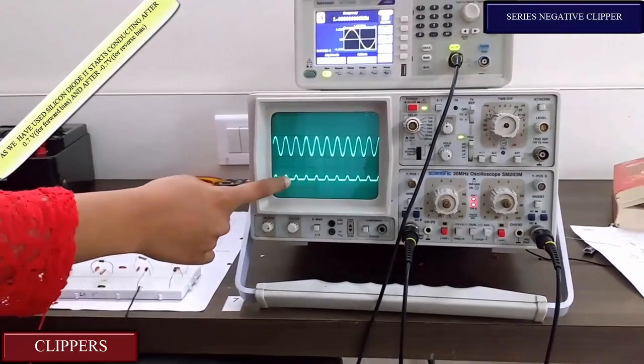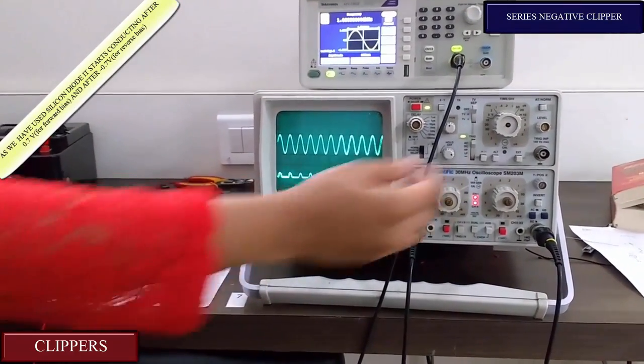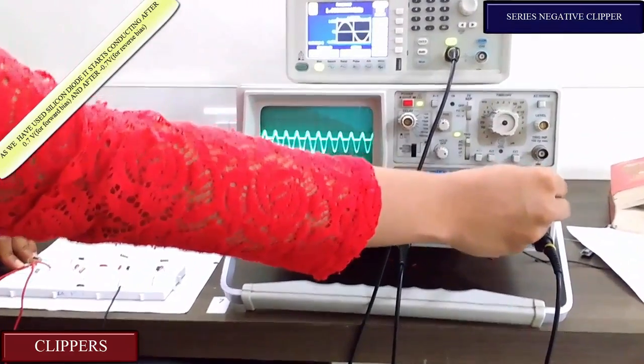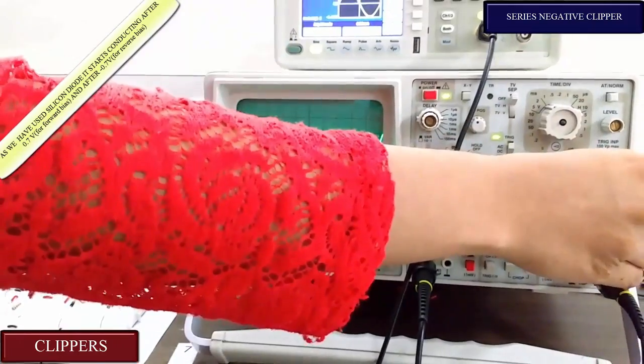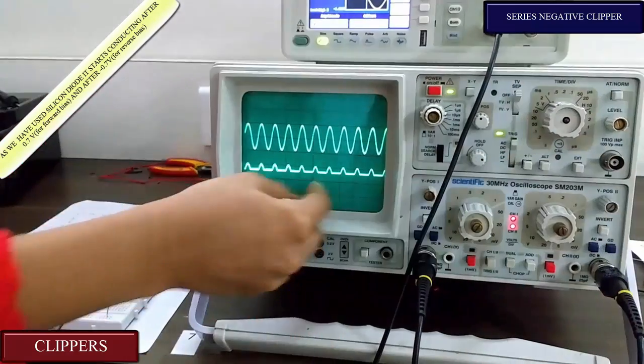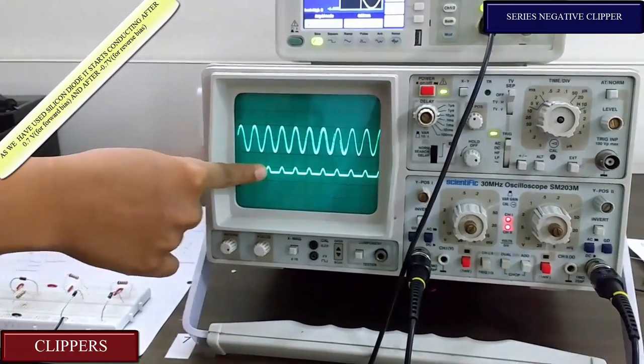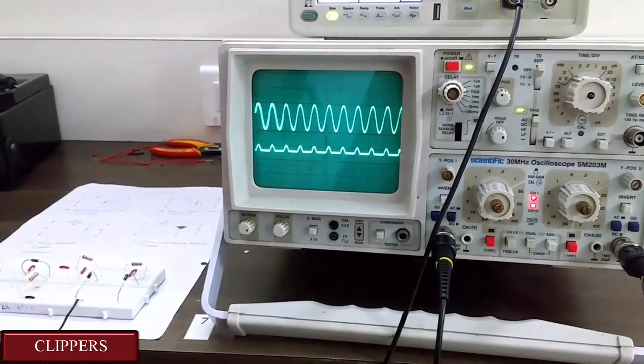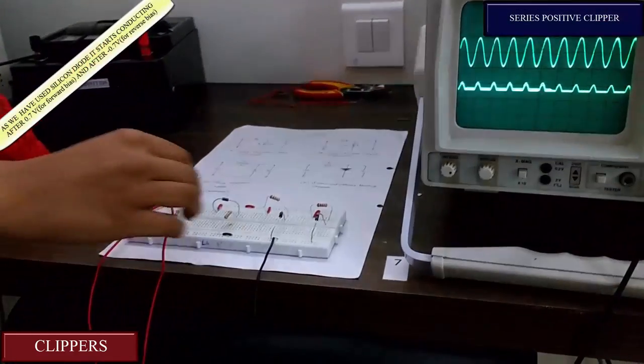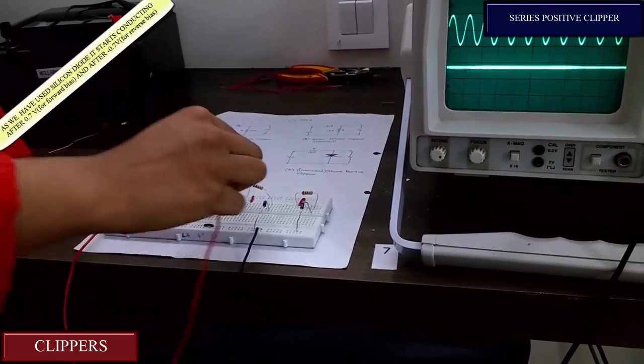This is what we have obtained at the output. Now if I move this above you can easily see that most of the negative part is completely clipped and some of the positive part is remaining. That's what happens in series negative clipper. Now let's see what happens in series positive clipper.